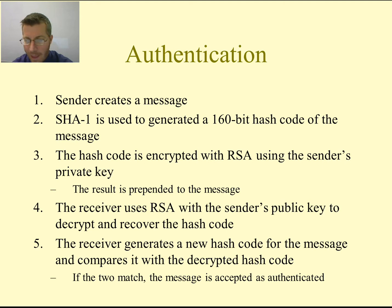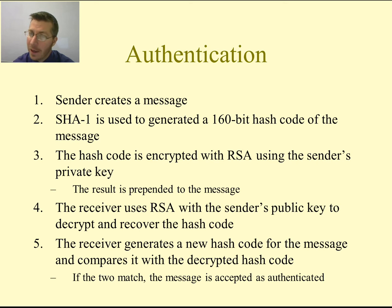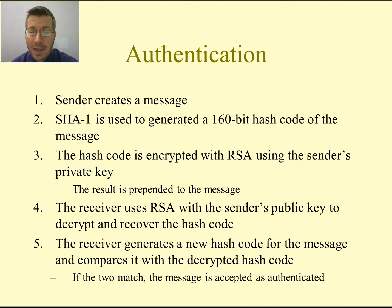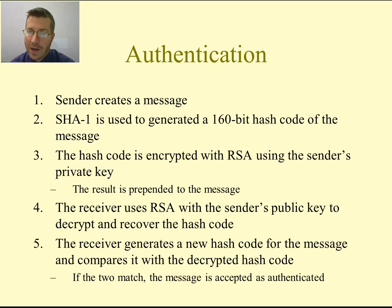Let's look at authentication. If we want to authenticate a message, the sender creates a message. We then use the SHA-1 hash to generate a 160-bit hash code of the message. We are not encrypting it — we are hashing it. Hashing is a one-way algorithm, so we get a 160-bit code but we cannot take that code and get the message back out. The hash code then gets encrypted with RSA using the sender's private key. We then prepend that encrypted hash code to the message.